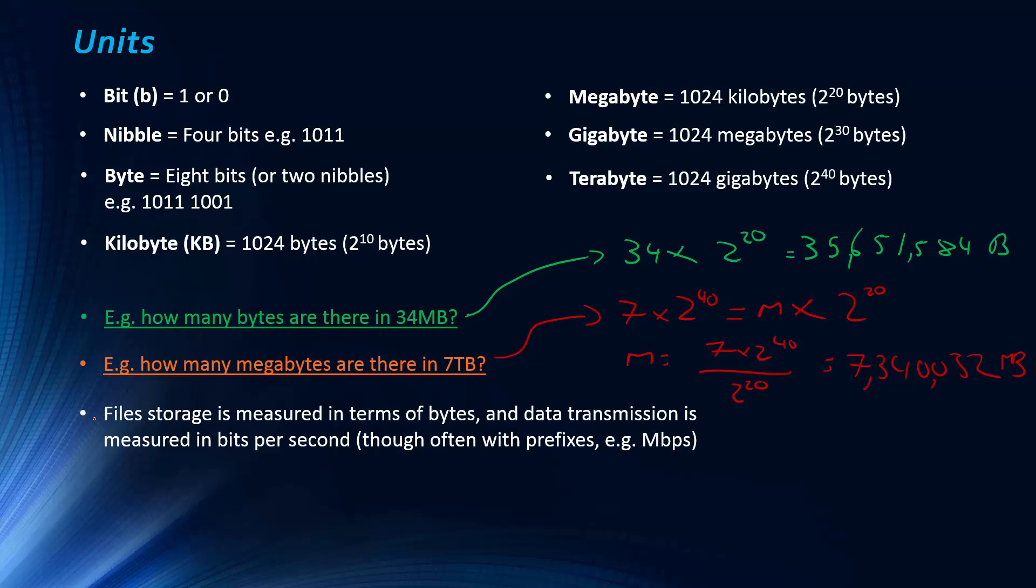File storage is measured in terms of bytes, and transmission of data, which we haven't really talked about, we're going to be looking at networking in future videos, but data transmission is measured in bits per second. We often have prefixes for this, and sometimes it's displayed as kilobytes per second, but it's important you understand that. This is the equation: bits per second equals bits over seconds, which equals the transfer rate.